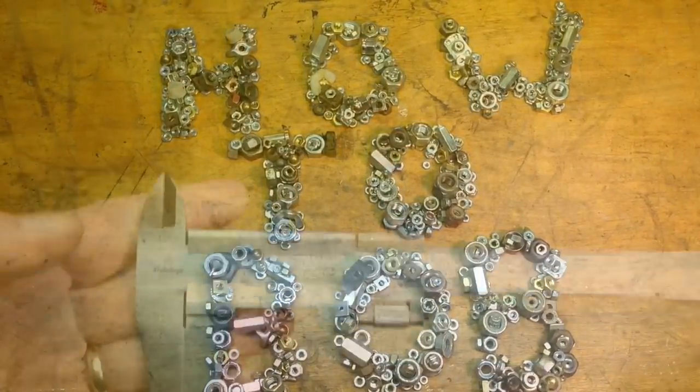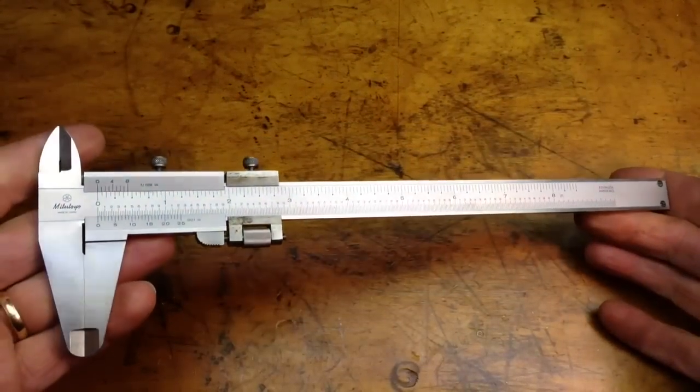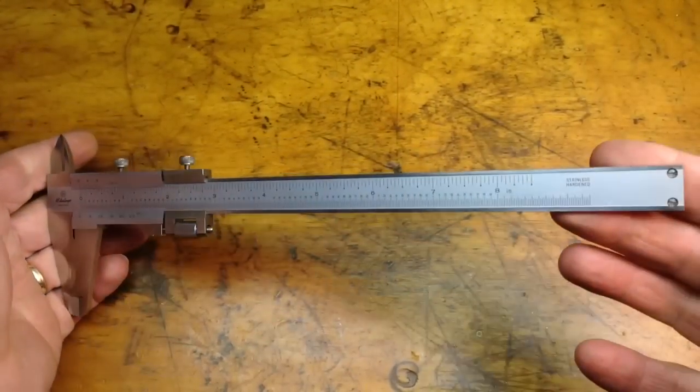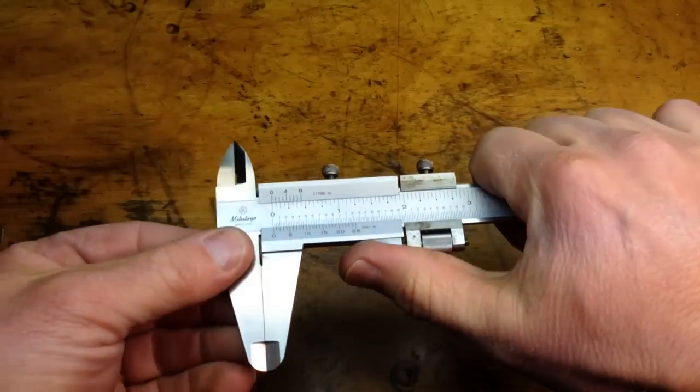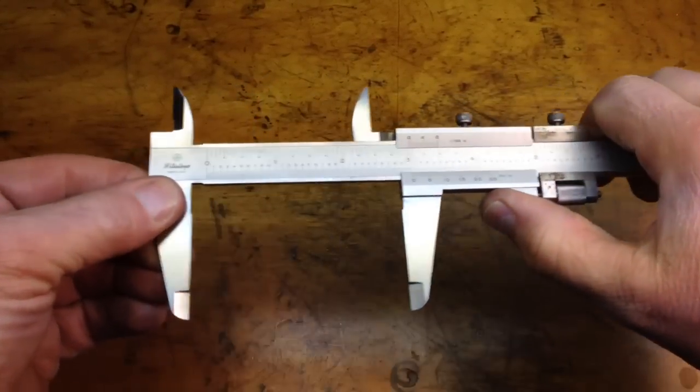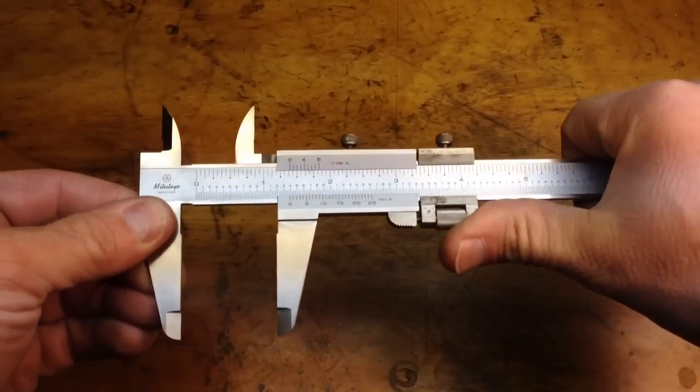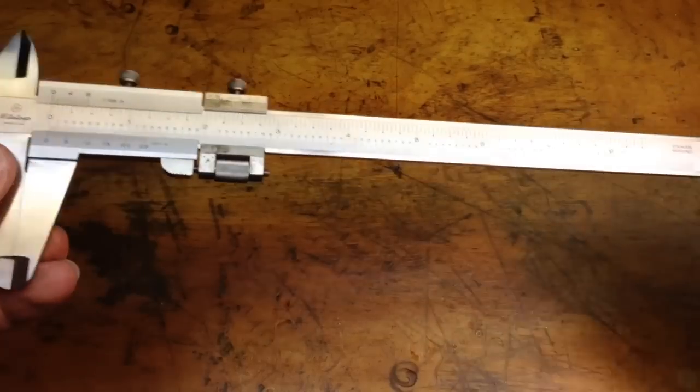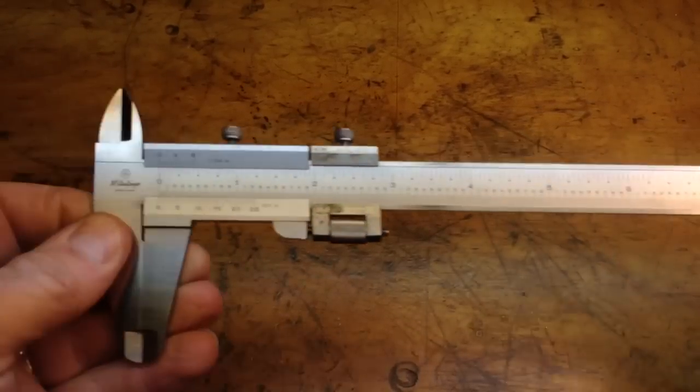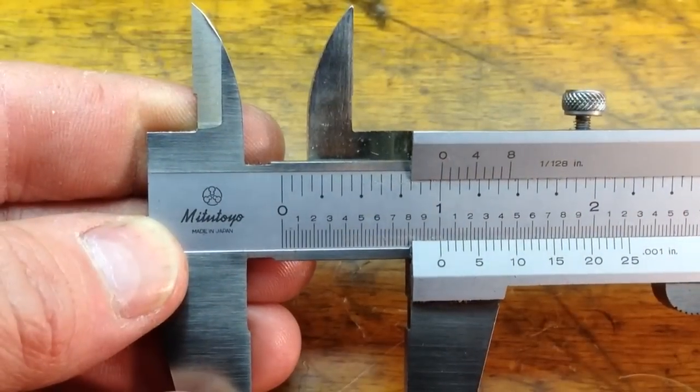I'm going to start out with the vernier caliper. As you see here, it has a rule and a sliding jaw and a fixed jaw, and there's a couple of clamping screws. You can use the bottom of the rule down here to measure depth, but that's your basic vernier caliper.